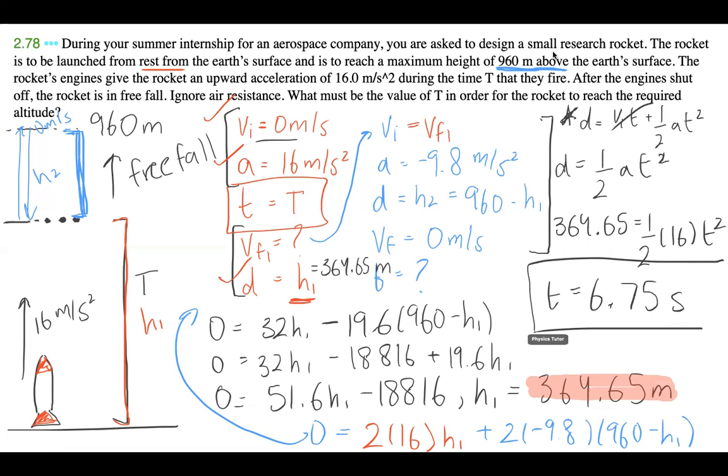And there we have it. This T, or sorry, I should write this as capital T, this capital T value for the time that it takes the rocket to go from zero to this final velocity in which it can start falling in free fall to ultimately reach this 960 meters, the time it takes for it to have to accelerate at 16 meters per second squared is 6.75 seconds. And that's our solution. Thank you so much. And if you have any questions, please feel free to leave them in the comments or send me an email. Thank you so much. See you next time.